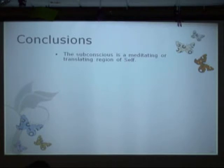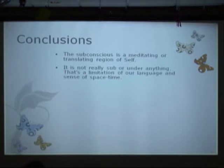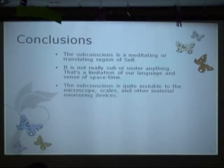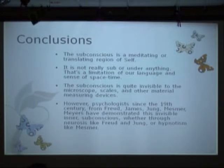So some conclusions thus far — we've looked at our outer ego, a little bit of the subconscious. I consider this a mediating structure between that and the inner self because there's so much data going on in there. And again, it's what Jane called the nuclear self. It's not really sub or under anything — that's just the way we have to try and point it out in our own awareness. It's invisible to microscopes, weighing instruments, and other material measuring devices. However, since the 19th century, Freud, James, Jung, Mesmer, Myers have demonstrated this invisible inner subconscious structure exists and empirically has been proven.